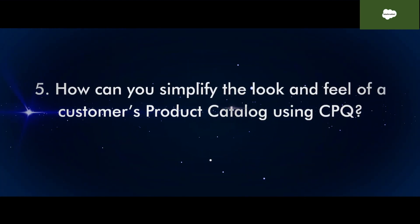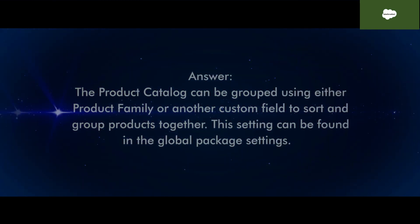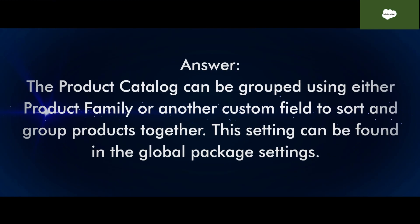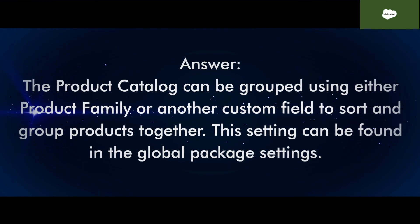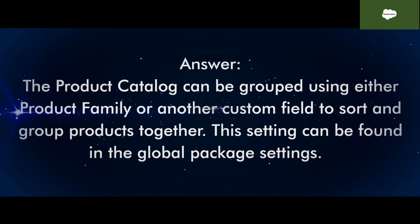Question 5: How can you simplify the look and feel of a customer's product catalog using CPQ? The product catalog can be grouped using either product family or another custom field to sort and group products together. This setting can be found in the global package settings.